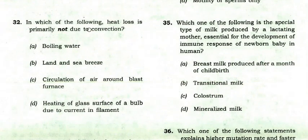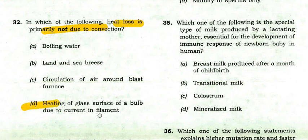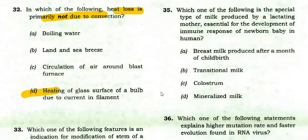Heat loss primarily not due to convection — the right option is heating of the glass surface of a bulb due to current in filament. Boiling water, land and sea breeze, circulation of air, and blasts are all convection phenomena.